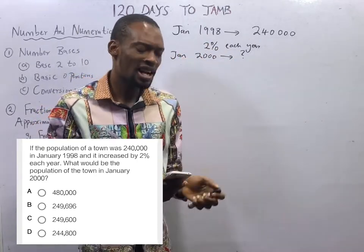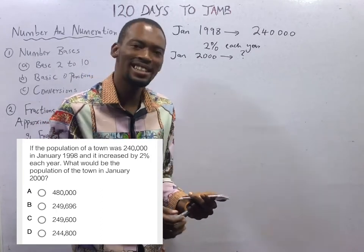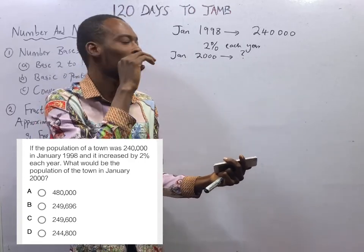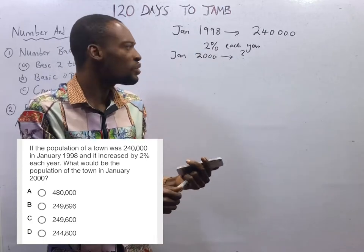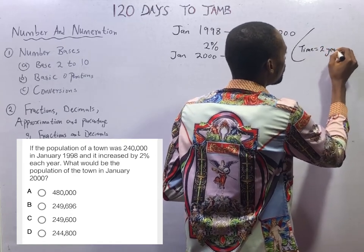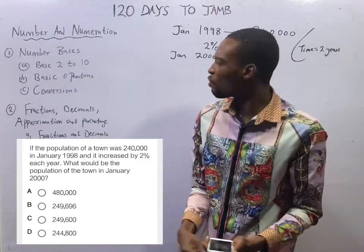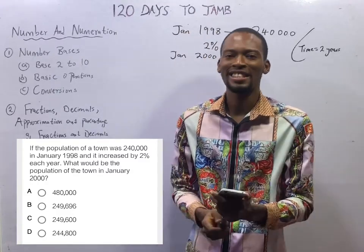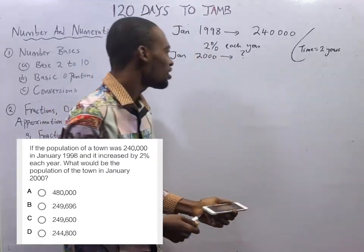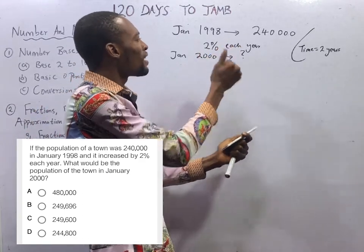From 1998, how many years would it be? How many years between 1998 and 2000? In January 1999 it would be one year, and January 2000 that is two years. So time equals two years. Percentage simply means over 100 — if I say 5%, that is 5 over 100; if I say 10%, it means 10 over 100.